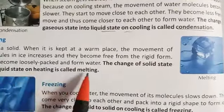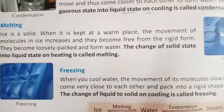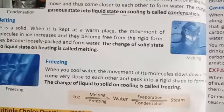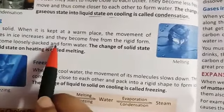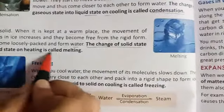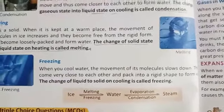In ice, the molecules are completely packed. When the temperature is low, ice is in solid state. But when it is placed in a warm place, the molecules of ice slowly increase their movement and become free from the rigid form, becoming loosely packed. The ice changes into water, which is the liquid state. The change of solid state into liquid state on heating is called melting. For example, ice on heating in a warm place changes to liquid state.